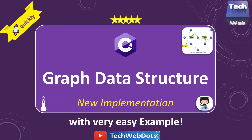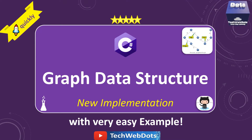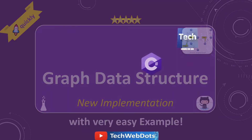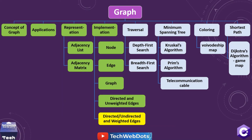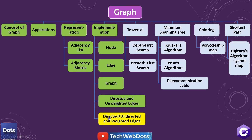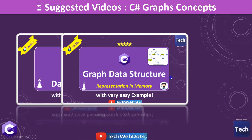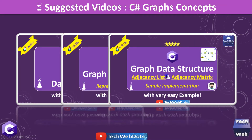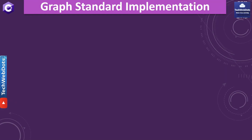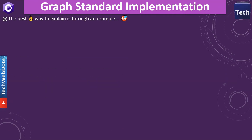Graph implementation is a very important topic and there are multiple ways to implement a graph. I am explaining one way — the non-zero index based approach. I strongly suggest you watch the previous videos where I have explained graph data structure, its representation, and the adjacency list and adjacency matrix with simple implementation.